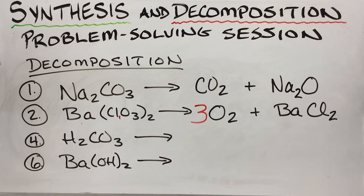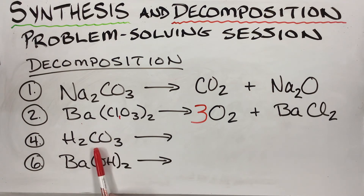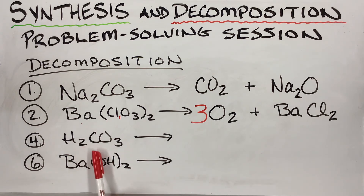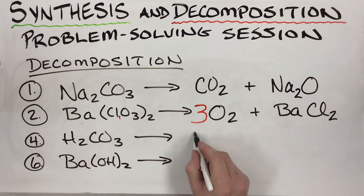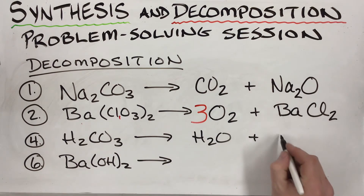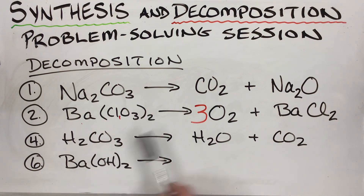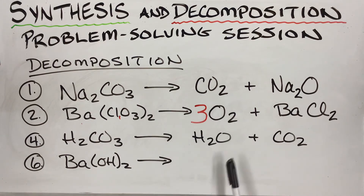Carbonic acid follows two rules at once: acids kick out water, and carbonates kick out CO₂. So carbonic acid breaks down into water and carbon dioxide. H₂CO₃ → H₂O + CO₂. This one is already balanced.